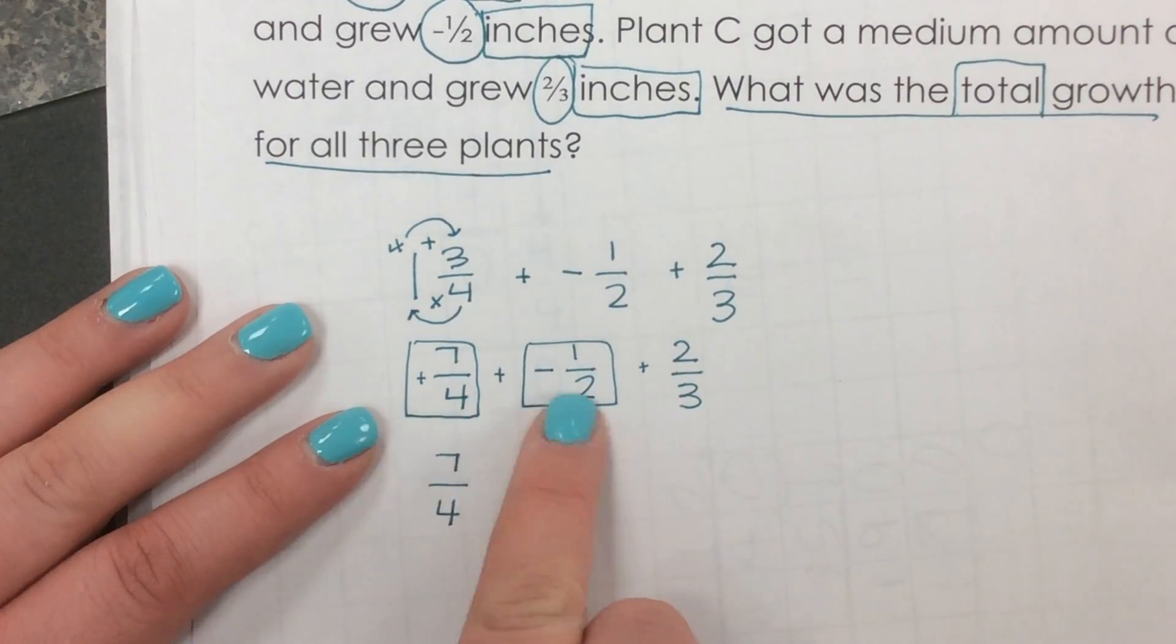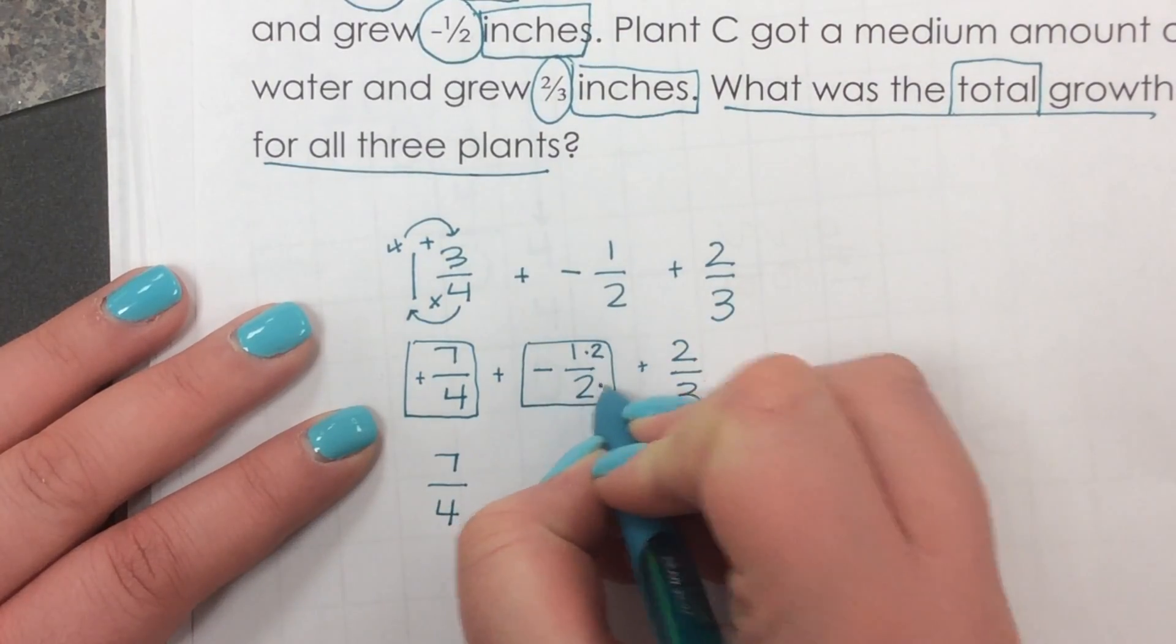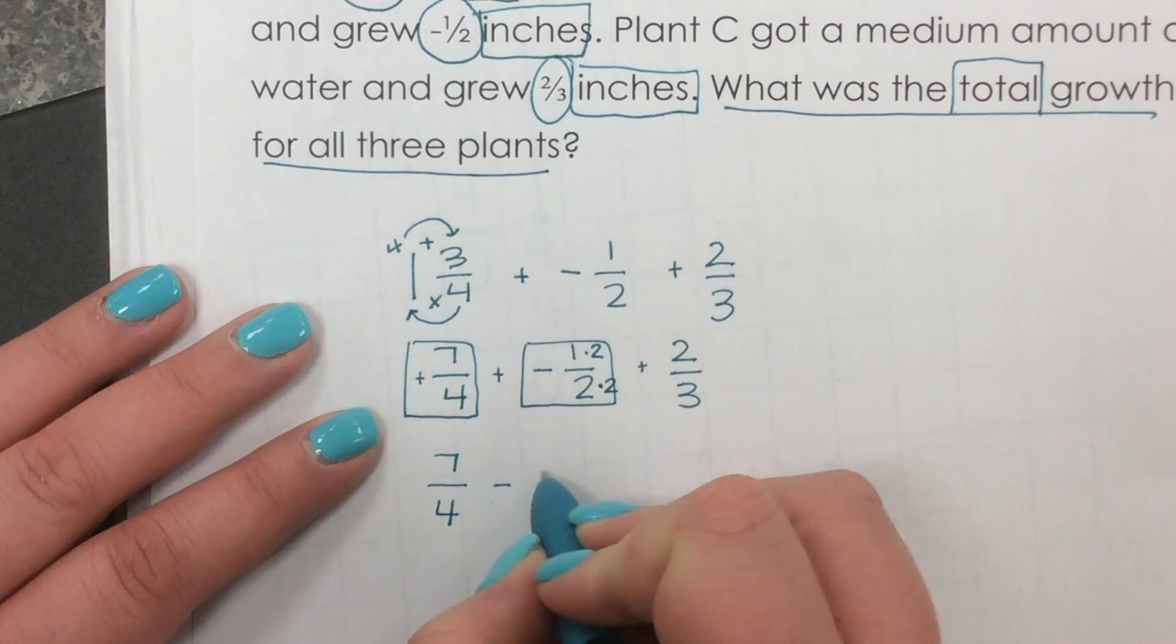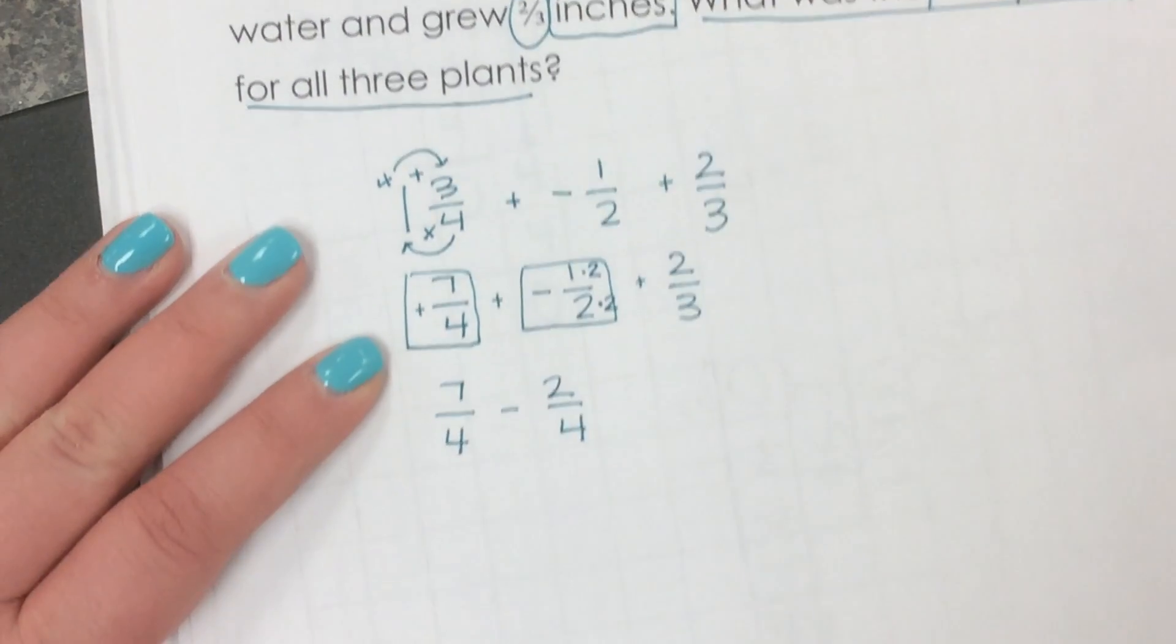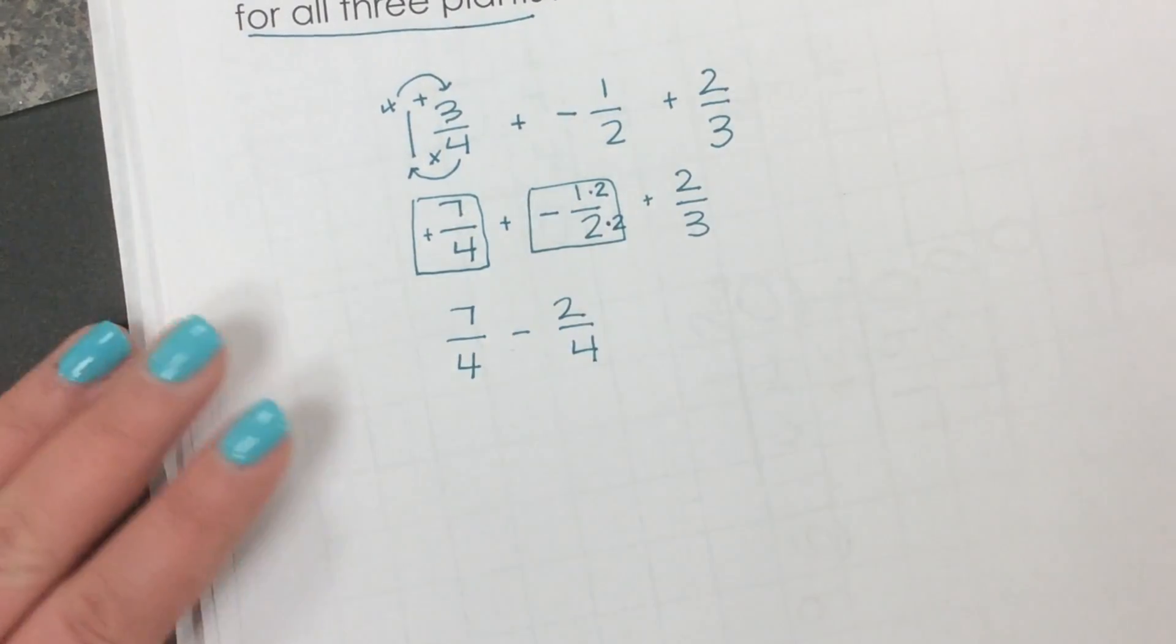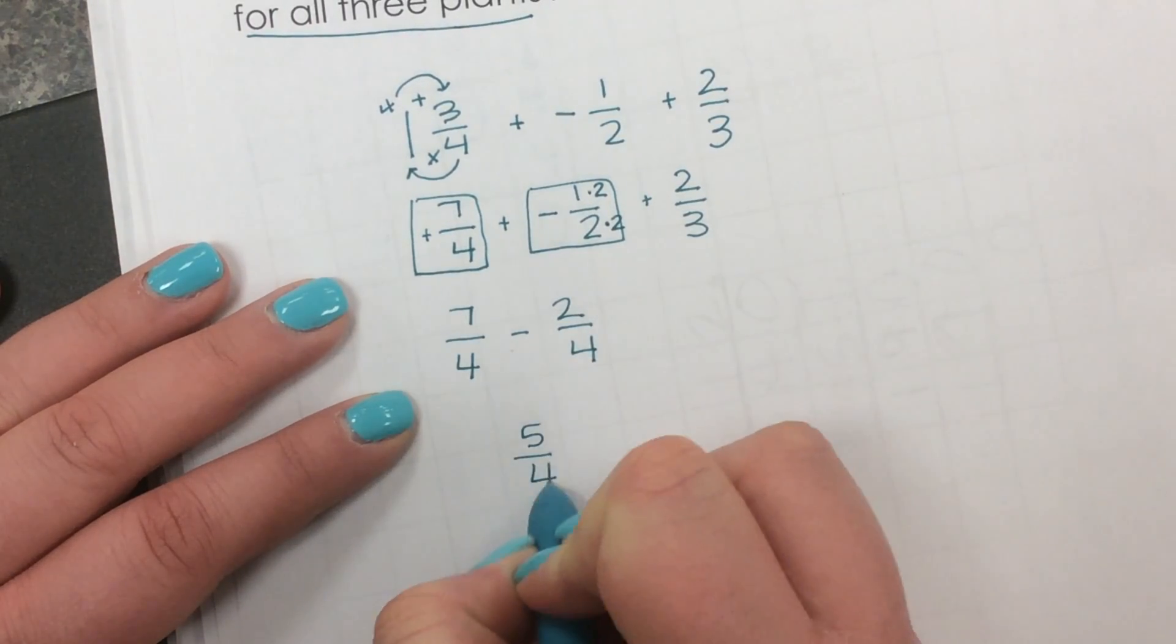Well, that tells me I need to change this two to a fourth. So I've got to multiply both the top and the bottom here by two. And so I'll have minus because, again, we're subtracting two fourths. And when we keep the sign of the highest value, we're going to keep the positive. So here I just subtract the numerators and I have five fourths.